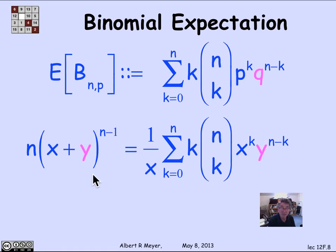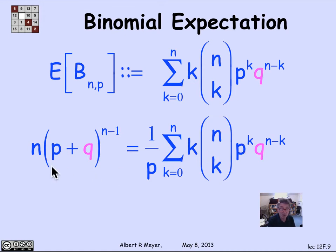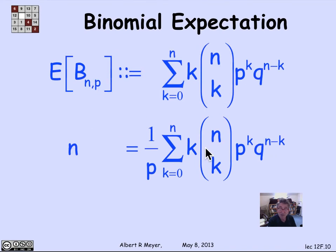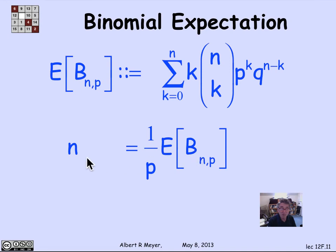So I just plug in the p and q. Now the left hand side, p plus q is 1. So the left hand side is going to become n. And this right hand side now is exactly the expectation of B_{n,p}, this part of it anyway. So what I'm going to wind up with is that n is equal to 1 over p times the expectation of B_{n,p}.